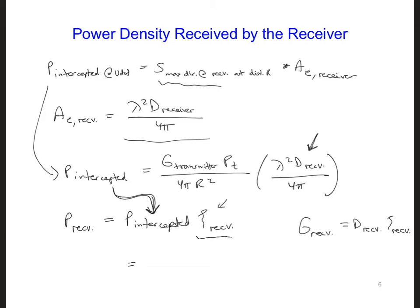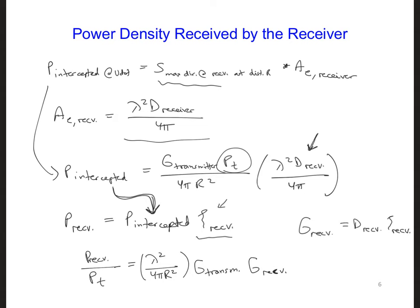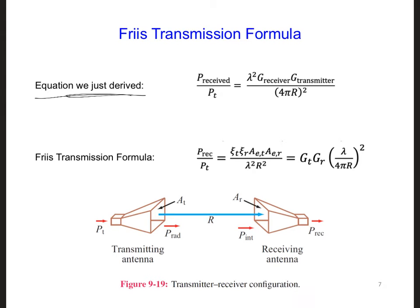So what we write is λ² over 4πR² out in front, and all we're left with is the gain of the transmitter and the gain of the receiver, along with the total power at the transmitter. Dividing by the total power gives us the ratio of total received power to total power supplied to the transmitter. Comparing this equation to the Friis transmission formula, you can see that they're identical. We can use the Friis transmission formula to calculate the total power received at the receiver from the total power supplied to a transmitting antenna.